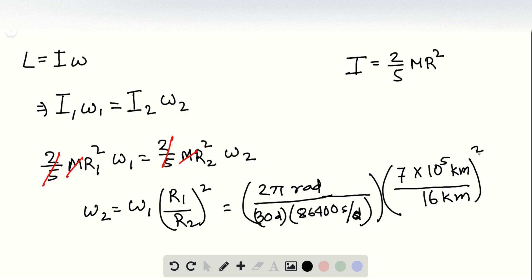Then we take a square. So that gives us 4.6 times 10 to the power 3 radians per second.